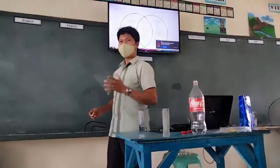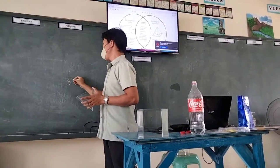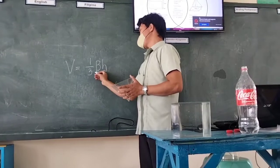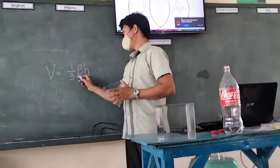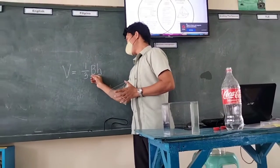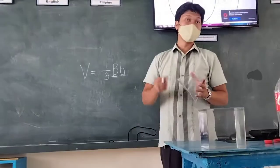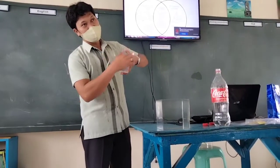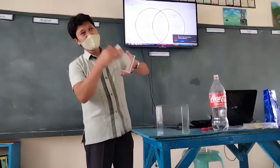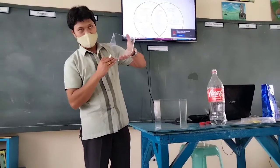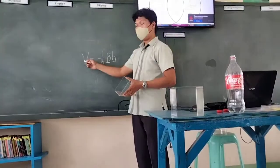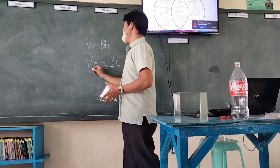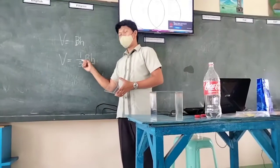That is why the formula for any rectangular-based pyramid is one third times the volume of the base times the height. The volume of the base is the area of the base times the height, and the area of the base depends on what shape the base is. For example, if the base is a square with area 10 square meters and the height is 10, then it is 10 times 10 times 10. So if the volume of a rectangular prism is base times height, the volume of a pyramid is one third base times height.